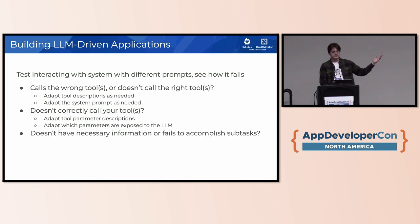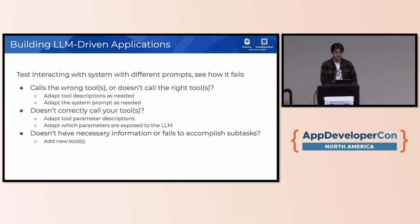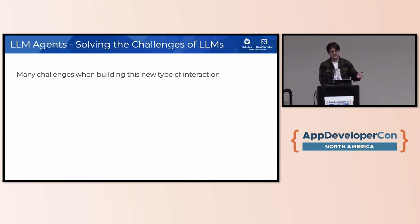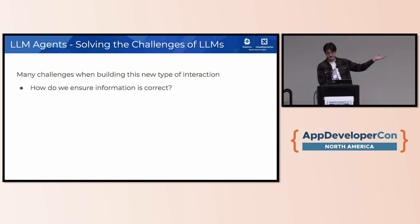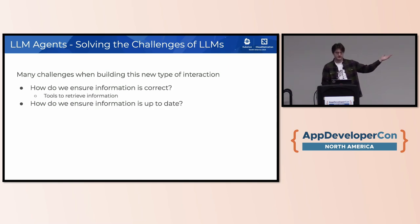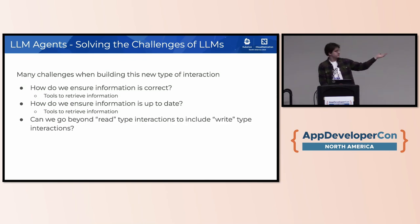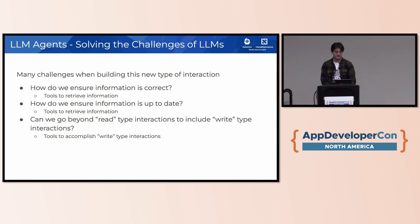In this way, we can solve all the challenges: for correct information, we call a tool to retrieve it; for up-to-date information, again a tool to retrieve it; and for write-type interactions, we call tools to accomplish them. So we have a small demo of how this works.